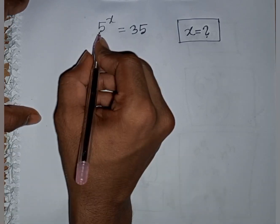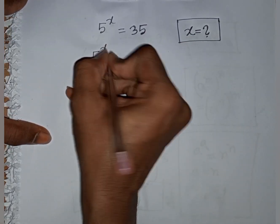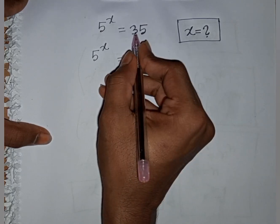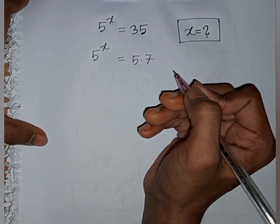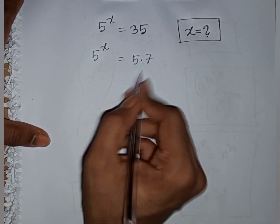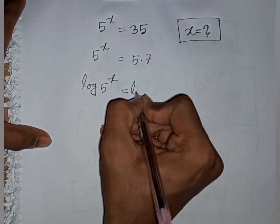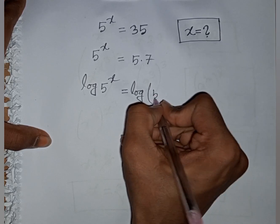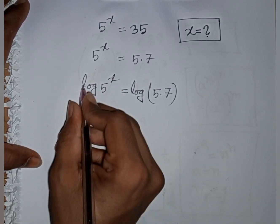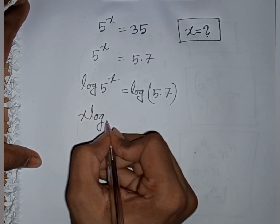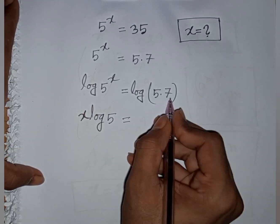How to solve 5 power x equals 35 — find the value of x. We have 35 written as 5 times 7. We apply log on both sides: log of 5 power x equals log of 5 times 7. This power x moves to the base, giving x times log of 5 equals log of 5 times 7.